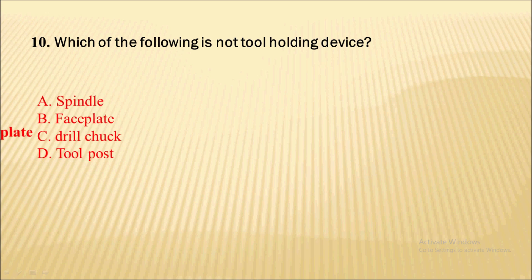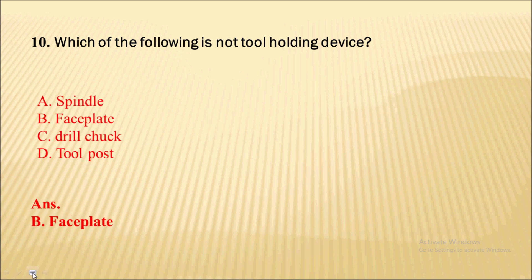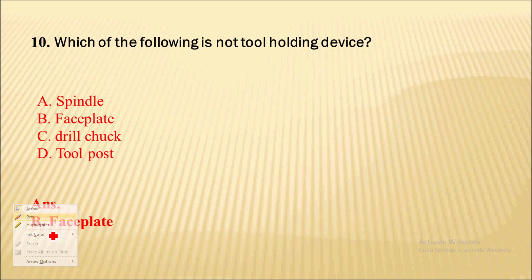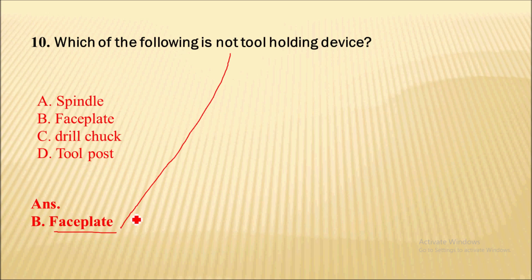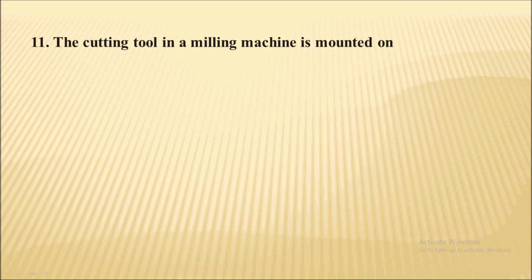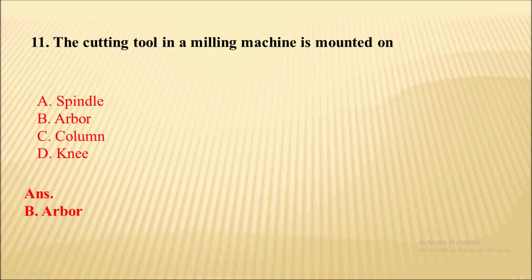Next question: which of the following is not a tool holding device? You have four options, and the correct one is option B — a face plate. It is not actually a tool holding device.